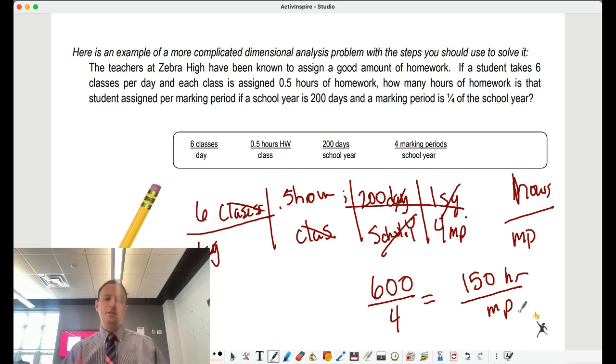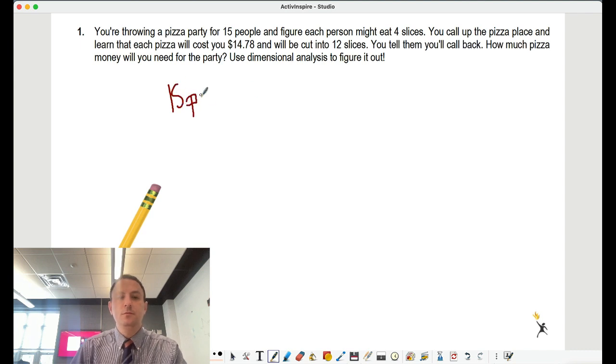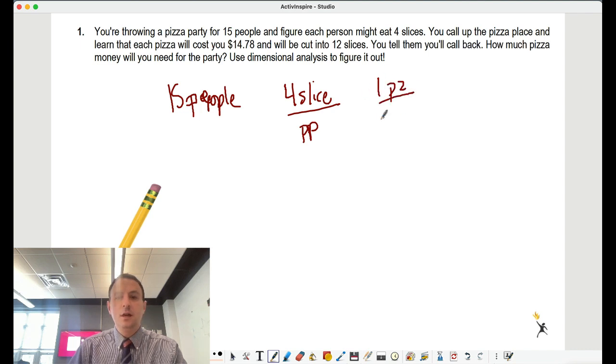All of it is just setting up and making sure those equations cancel so that if I use the quotient law, it lets me cancel it out. So if I try another problem, you're setting up a party. We've got 15 people. Each person eats four slices. So if we have 15 people, four slices per person, call the pizza place. Each pizza, one pizza is 14.78. And there's one pizza for 12 slices.